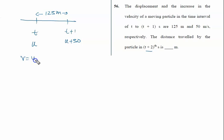First we will use the equation v = u + at. So we write v is u+50 equal to u + a, and t is 1 second time interval, so a will be 50 meters per second squared.